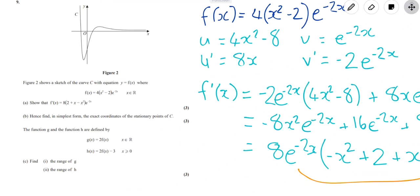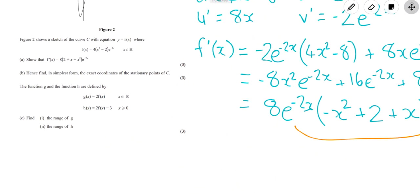Part B, hence find in its simplest form the exact coordinates of the stationary points of C. Stationary points are turning points. That's where the gradient is 0. So all of this that we've just done, f dash of x, gives us the gradient. So we need to set that equal to 0 to find the turning points. So e to the minus 2x. So we've got a couple of things multiplying here to give us 0. So we can break this into where both of those equals 0.